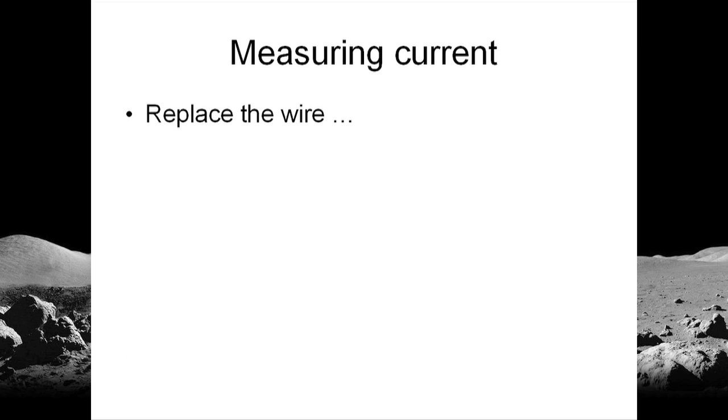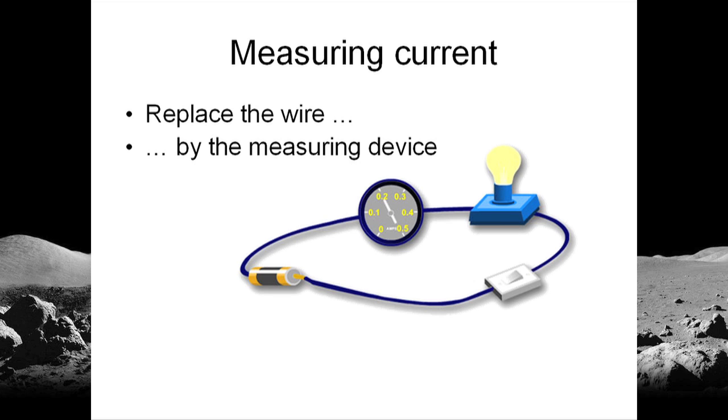Like here, we replace the wire where we want to measure the current by a measuring device, this way. This is the measuring device. It's in the path of the flow of electricity, the path of the current. That instrument will read something like 3 coulombs per second to the right.